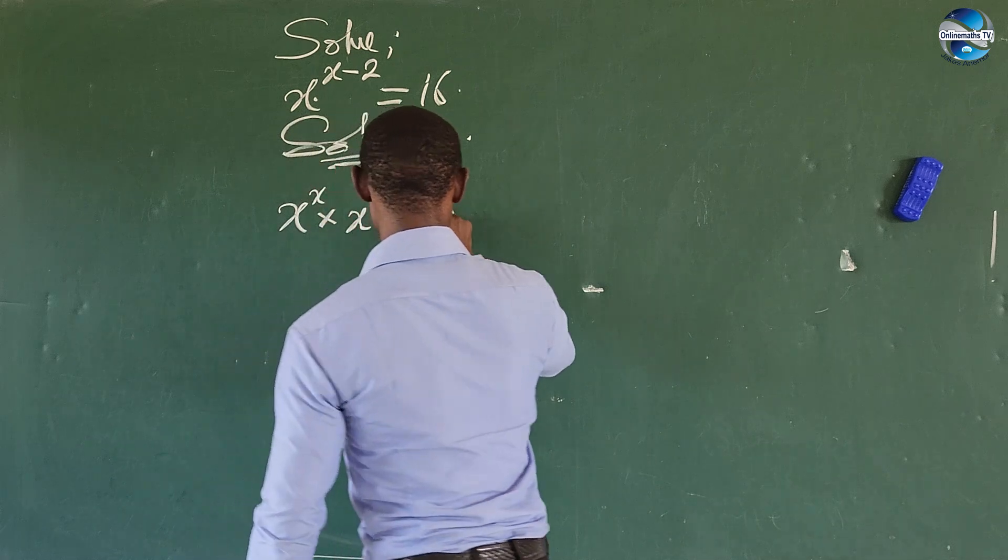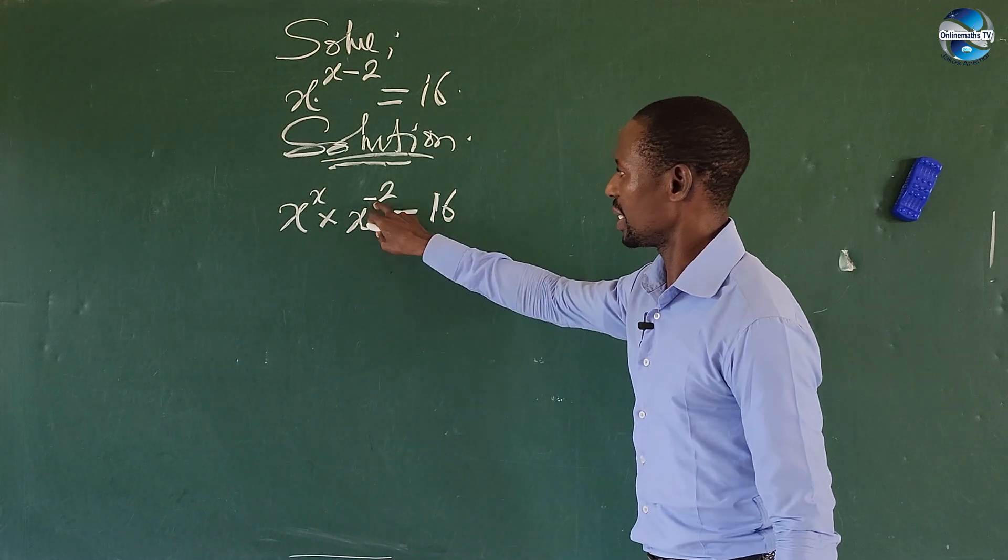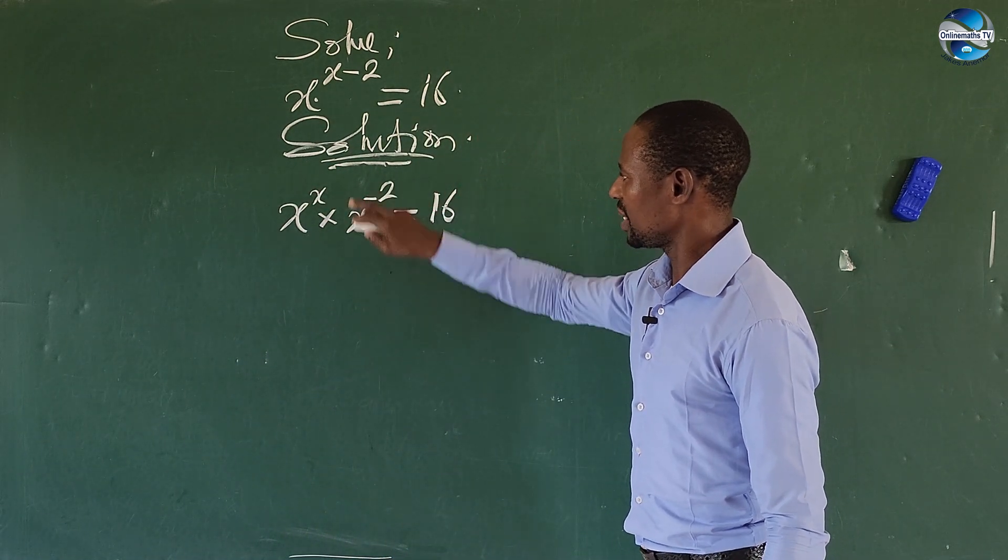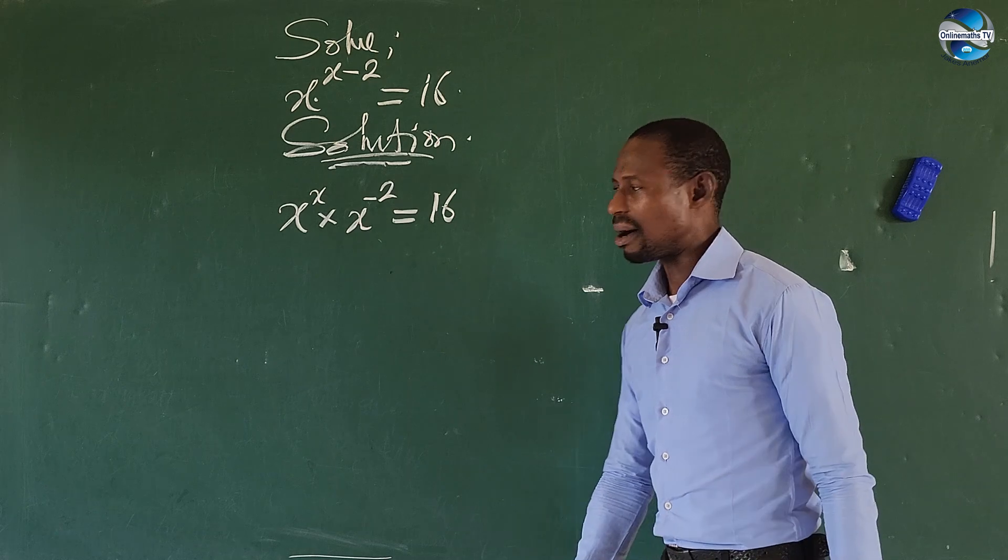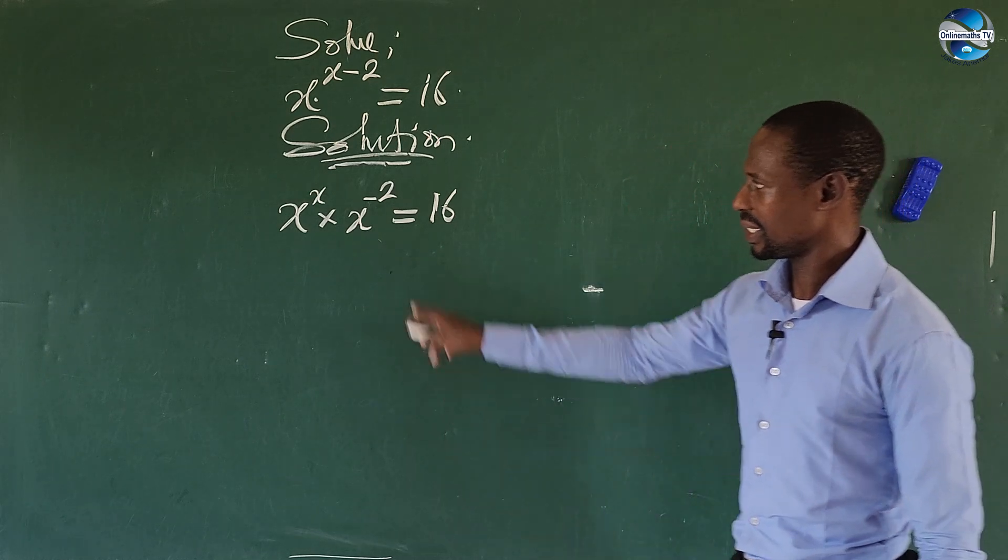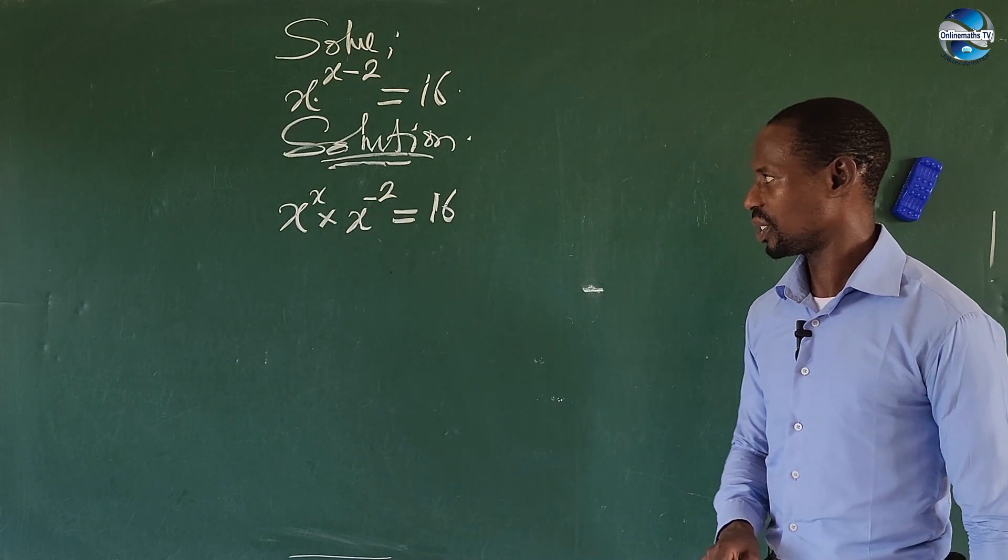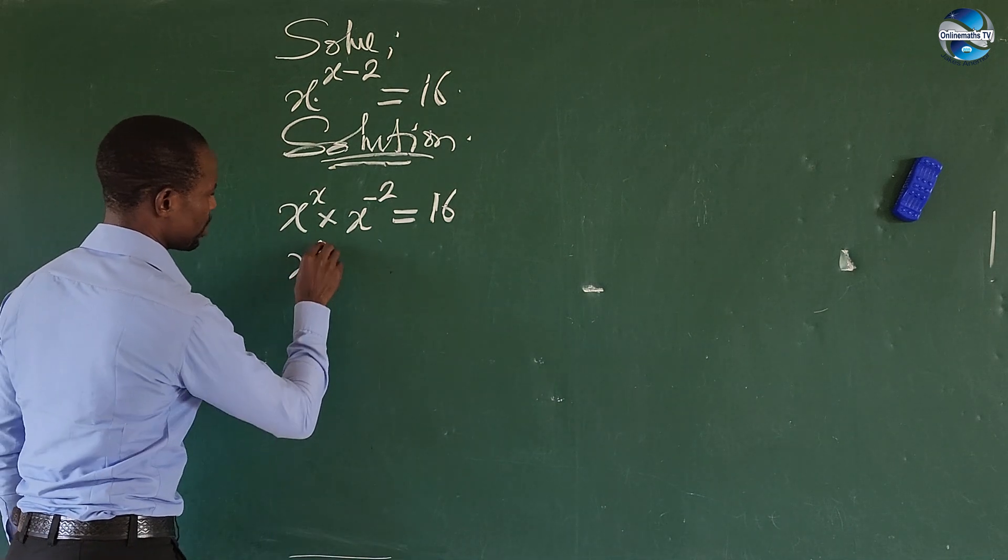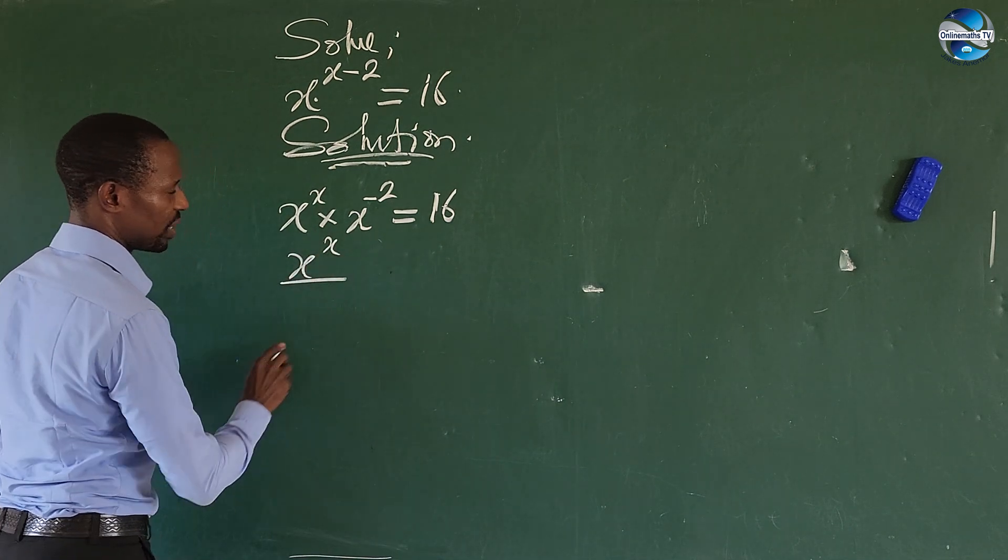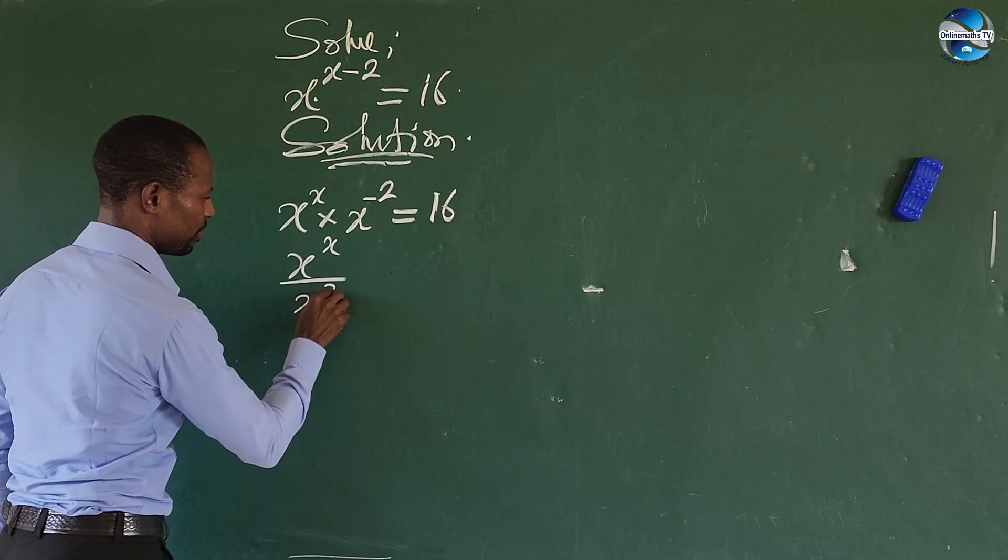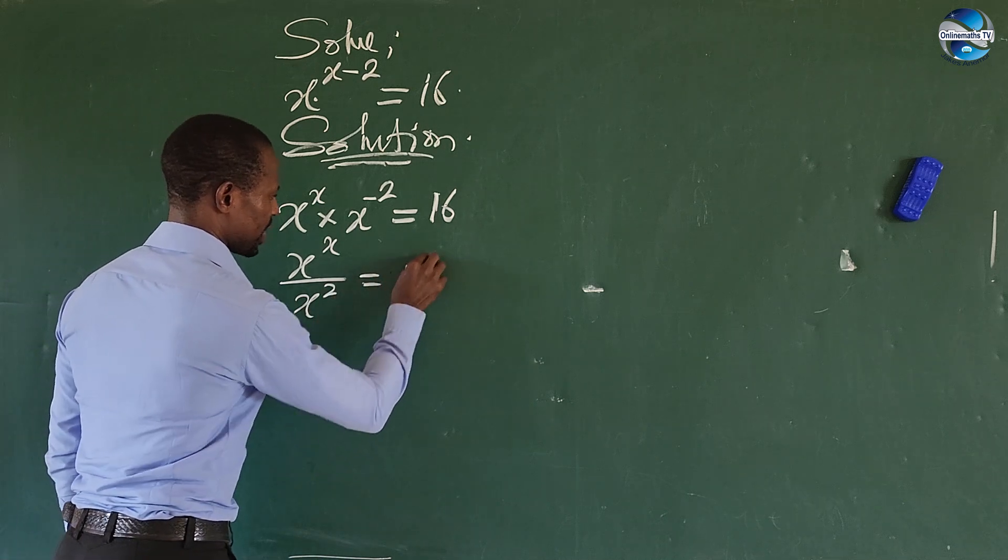Now from here, what do we do? We can fully eliminate this negative power here. How do we do that? That means we can write this as x to the power of x all over x to the power of 2 equals to 16.